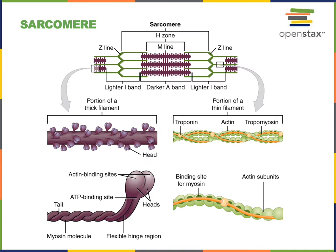Cardiac muscle is striated like skeletal muscle, resulting from the overlapping thick and thin filaments organized into sarcomeres. While the thick filaments contain the motor protein myosin, thin filaments contain actin, tropomyosin, and troponin. Tropomyosin covers the binding site for myosin on actin when the muscle fiber is at rest. Troponin is the calcium sensor protein that causes tropomyosin to move off of the binding site for myosin on actin, allowing myosin to bind to actin in the first step of the power stroke cycle — cross-bridge formation.